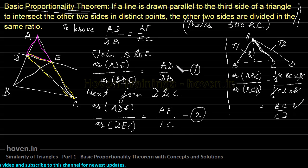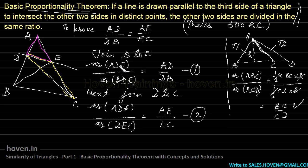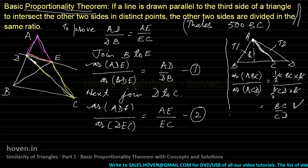The right-hand side of equation one is AD by DB and the right-hand side of equation two is AE by EC. The numerator ADE is already the same in both equations. So we just need to prove that the area of triangle BDE equals the area of triangle DEC.